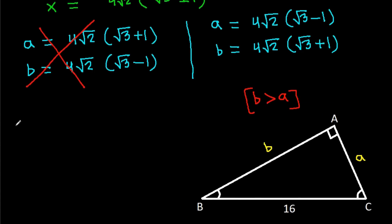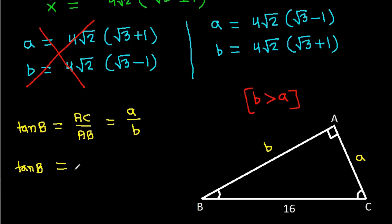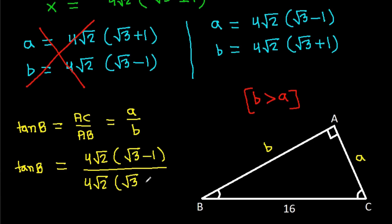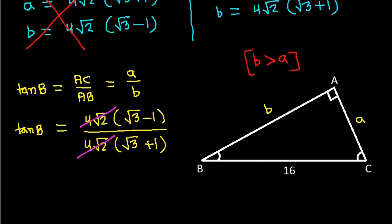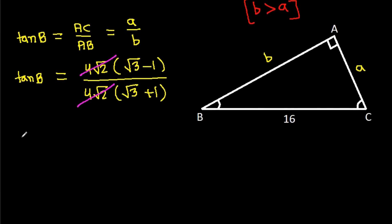Now, tan B equals AC over AB equals a over b equals 4√2(√3 − 1) divided by 4√2(√3 + 1). The 4√2 terms cancel, giving tan B equals (√3 − 1) over (√3 + 1).